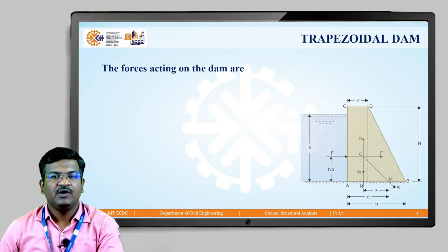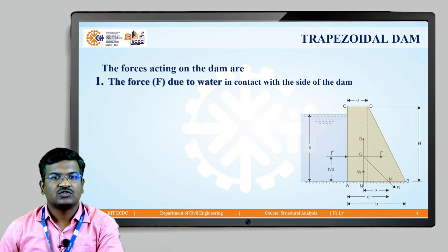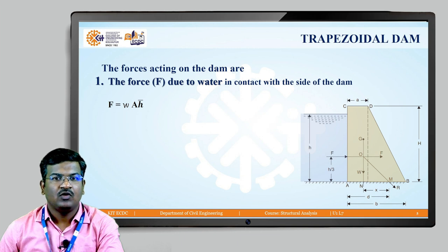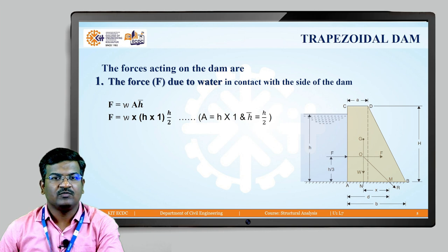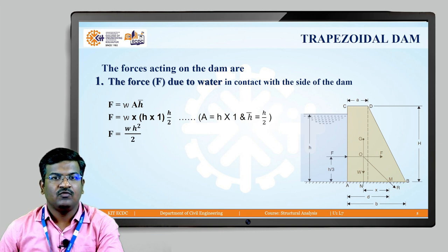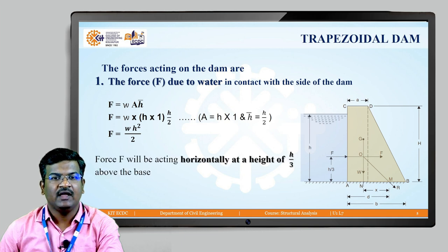Similar to the rectangular dam, two forces are acting. First is the force due to water in contact with the side of the dam. The formula is: F = W × A × h̄, where h̄ = h/2. So finally, the water force F = Wh²/2, acting horizontally at a height of h/3 from the base.